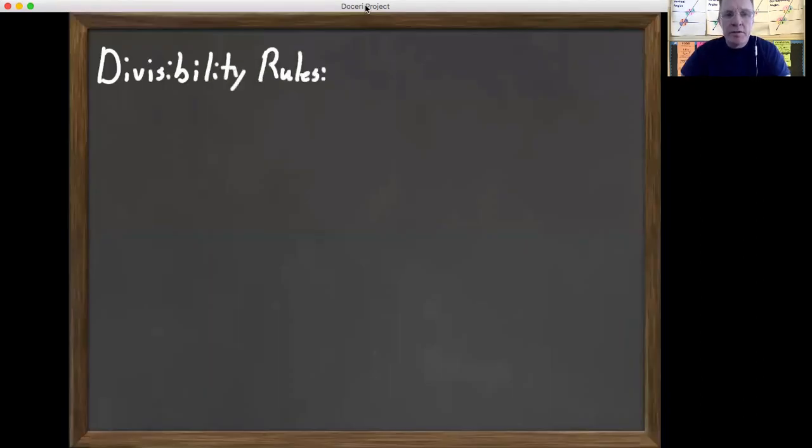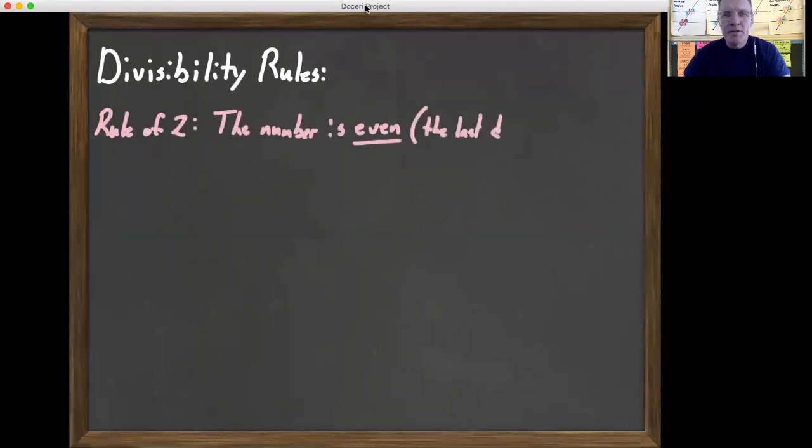The other thing we definitely need to know—and if you want to, you can take notes on this in either your notebook or if you need some guided notes, you can look in classroom—the divisibility rules. So the rule of two: if the number is even, then it's divisible by two. Meaning the last digit is 0, 2, 4, 6, or 8. So if it's an even number, it's divisible by two.